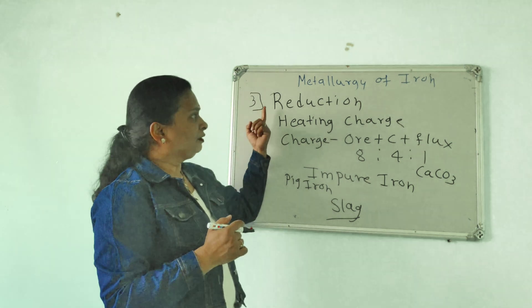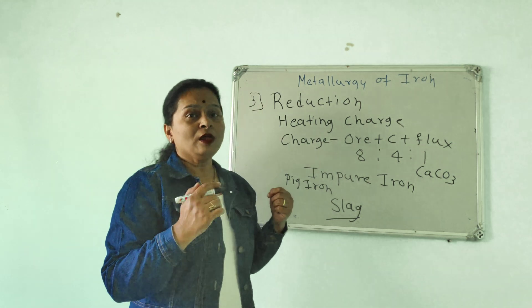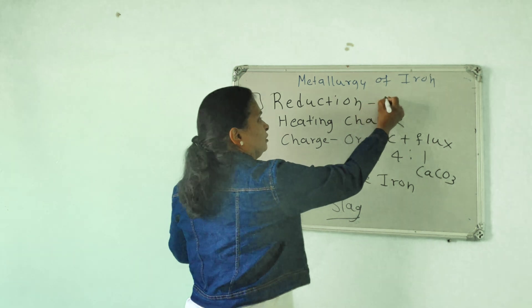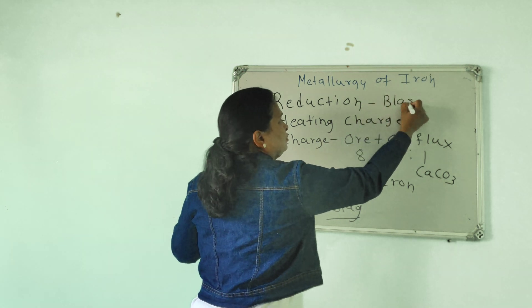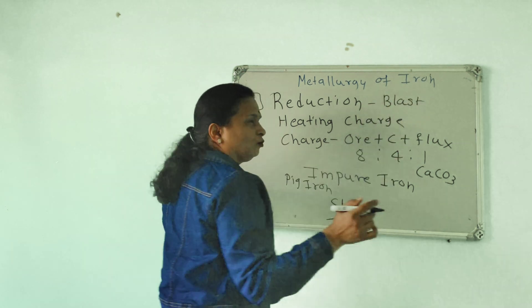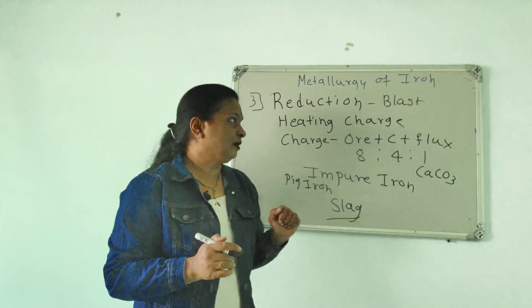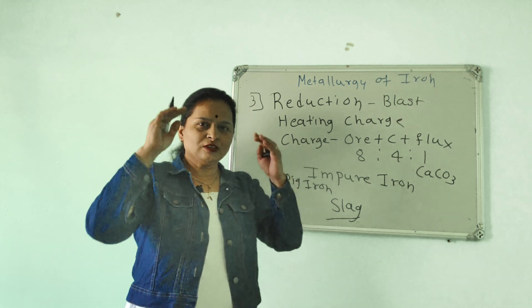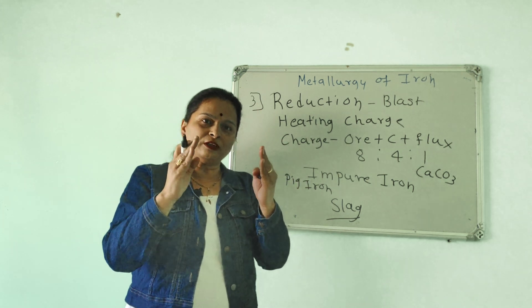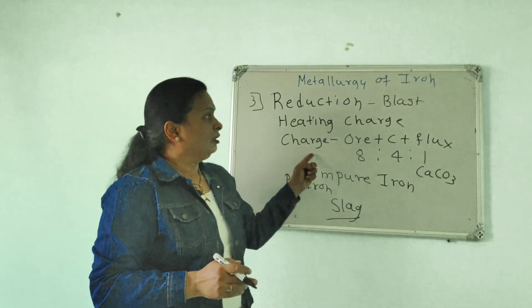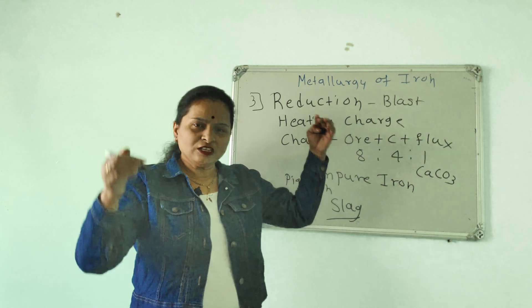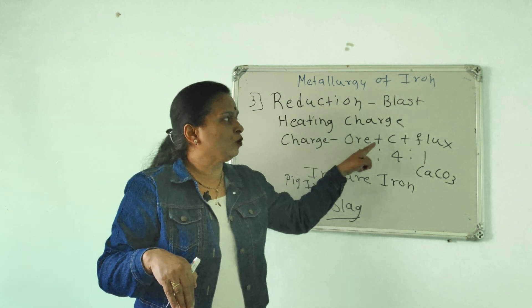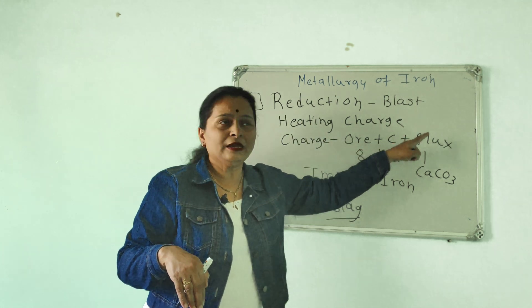This is the reduction method using the blast furnace. The blast furnace diagram shows the charge: ore, coke, and flux.